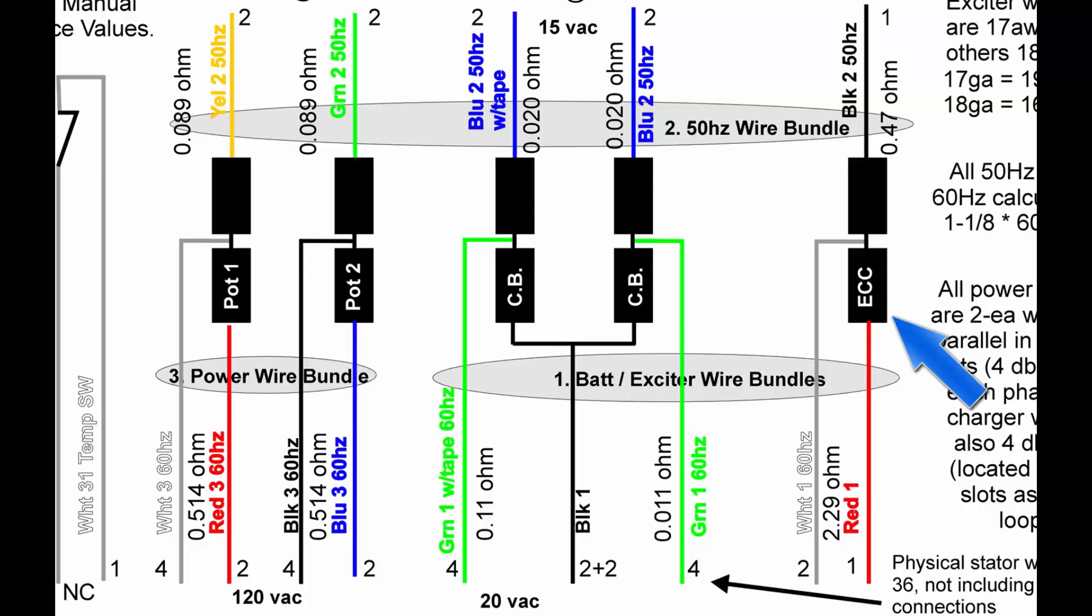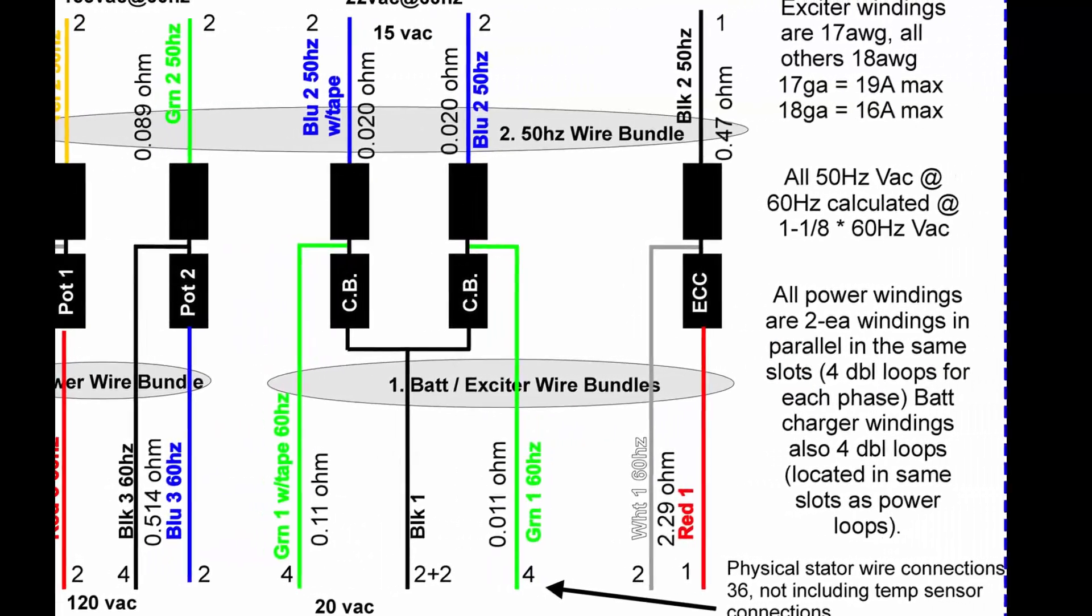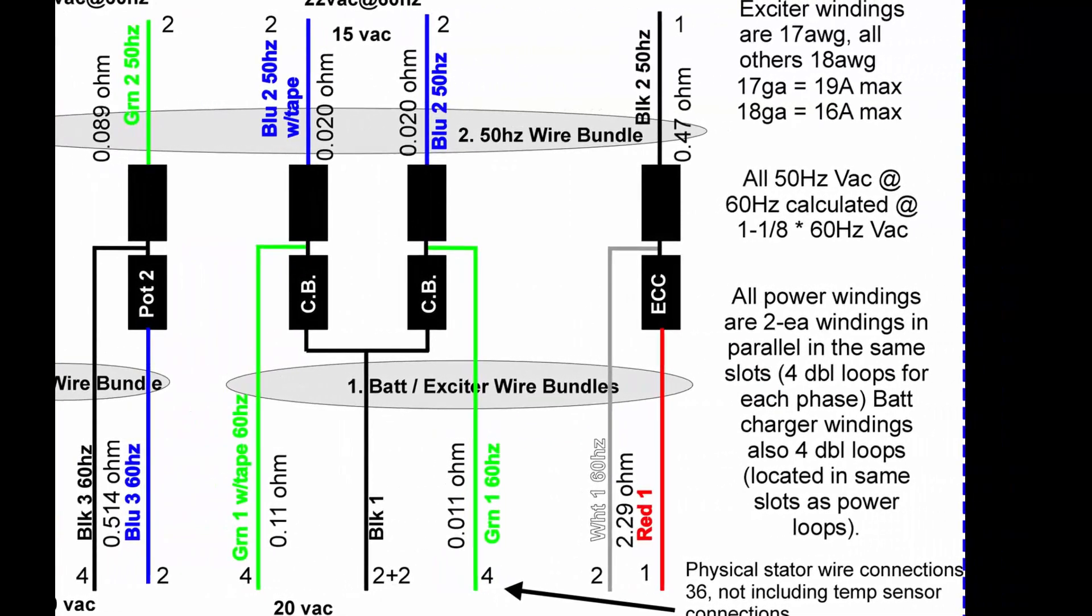And last but not least, we also have the exciter winding on the right-hand side labeled ECC. It's also 50 Hz or 60 Hz capable. Once again, red one to white one is for 60 Hz, and red one to black two at the top is for 50 Hz.